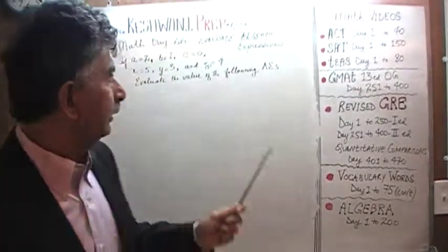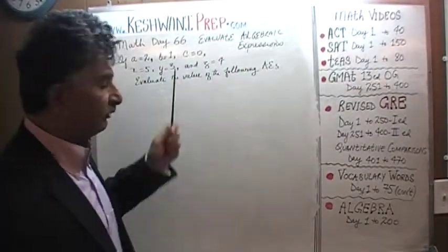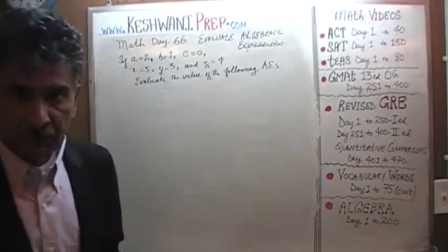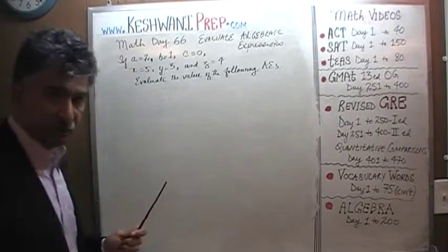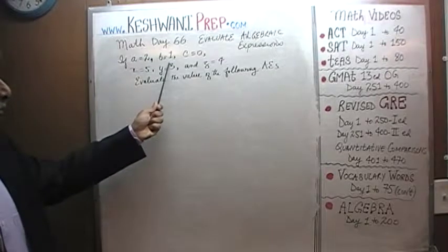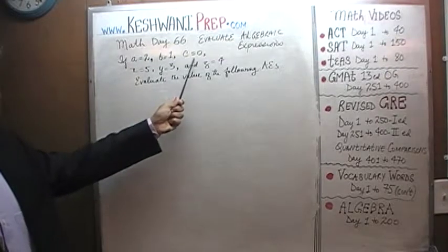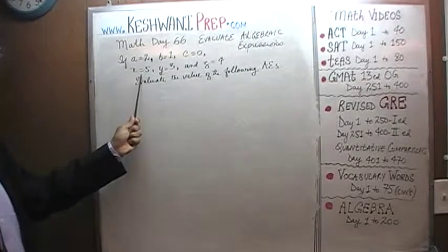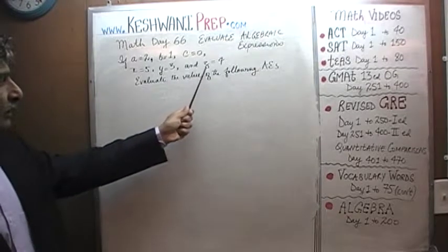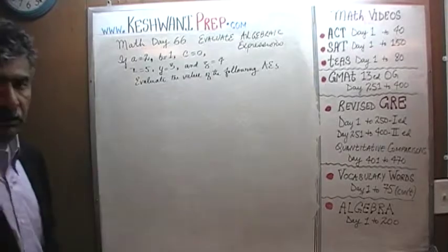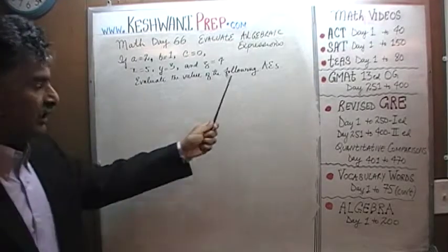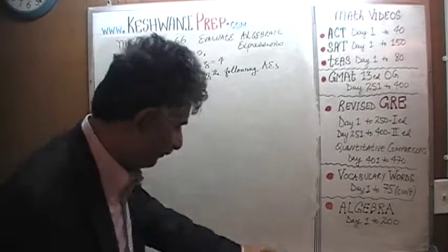Today is lesson number 66 and today we will evaluate some algebraic expressions. Here is what is given to us: a equals 2, b equals 1, c equals 0, x equals 5, y equals 3, and z equals 4.